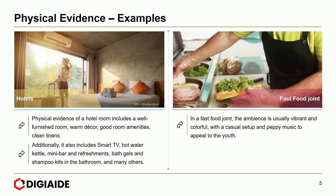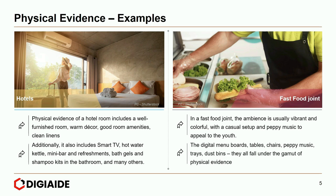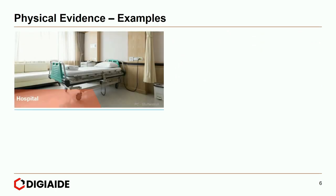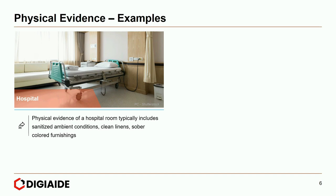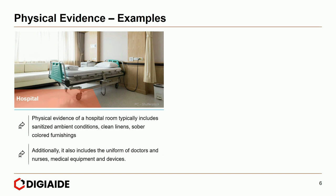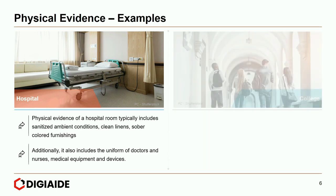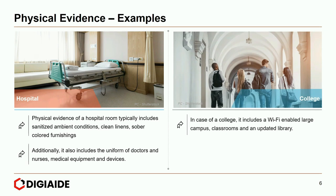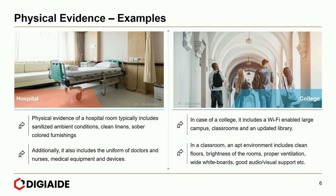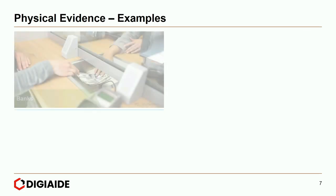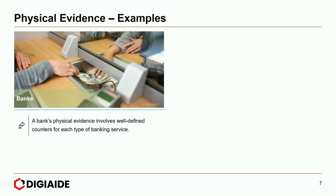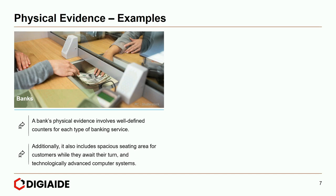In case of a fast food joint, the ambience is usually vibrant and colorful with a casual setup and peppy music to appeal to the youth. Digital menu boards, tables, chairs, peppy music, trays, dustbins etc. fall under the gamut of physical evidence of a fast food joint. Moving on to hospitals — physical evidence of a hospital room typically includes sanitized ambient conditions, clean linens, sober-colored furnishings, the uniform of doctors and nurses, and medical equipment and devices. In case of a college, it includes a Wi-Fi enabled large campus, classrooms and an updated library, with clean floors, brightness of rooms, proper ventilation, wide whiteboards and good audio-visual support. Moving on to banking — a bank's physical evidence involves well-defined counters for each type of banking service, spacious seating area for customers while they await their turn, and technologically advanced computer systems.